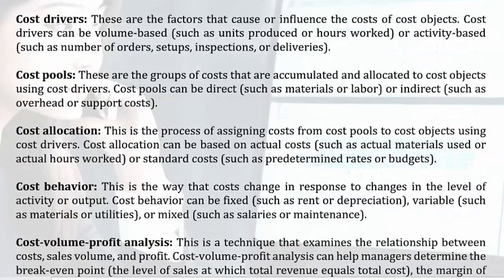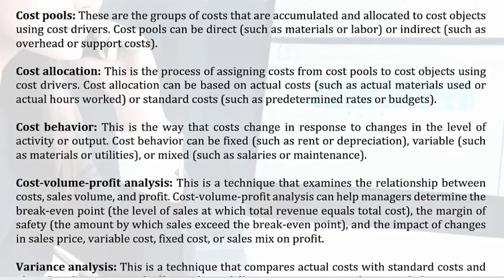Cost Pools — these are the groups of costs that are accumulated and allocated to Cost Objects using Cost Drivers. Cost Pools can be direct, such as materials or labor, or indirect, such as overhead or support costs. Cost Allocation — this is the process of assigning costs from Cost Pools to Cost Objects using Cost Drivers. Cost Allocation can be based on actual costs, such as actual materials used or actual hours worked, or standard costs, such as predetermined rates or budgets.